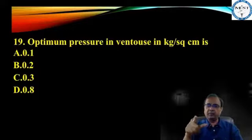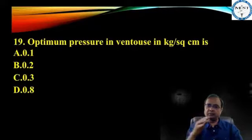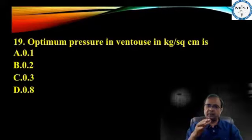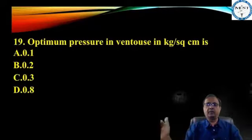So optimum pressure in Ventus in kg per square centimetre is 0.8.